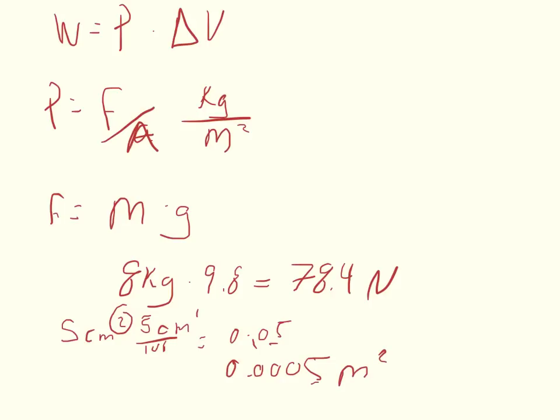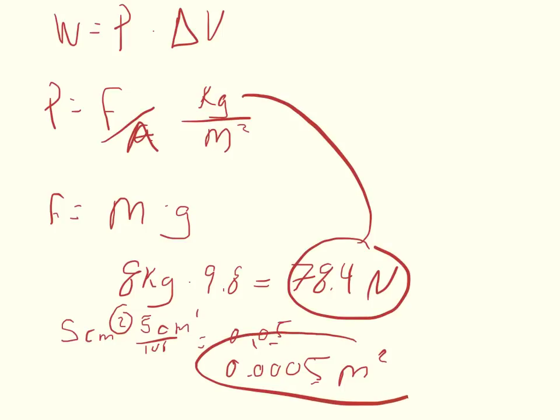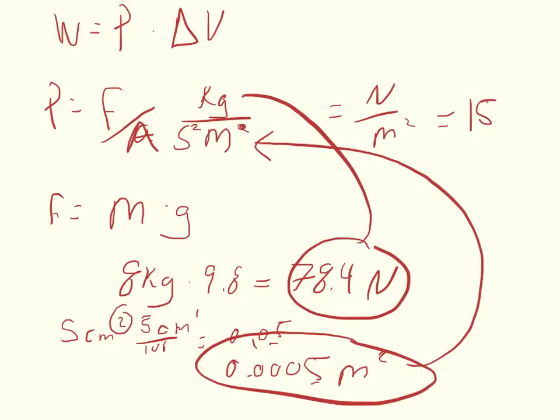And so if you plug in both of these numbers, 78.4 is our force, and 0.0005 is our area, and now that I'm actually looking at this, I'm realizing I gave this to you wrong, it's kilograms per second squared times meters, which is equal to newtons over meters squared. Anyhow, so you plug those numbers in, and you should get a pressure of 156,800 pascals.